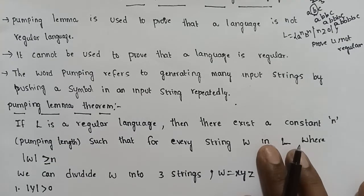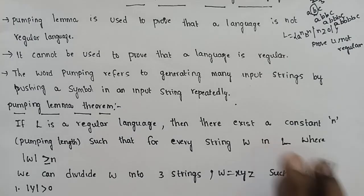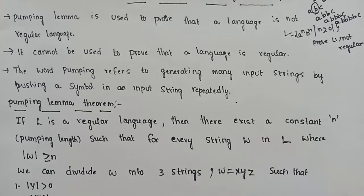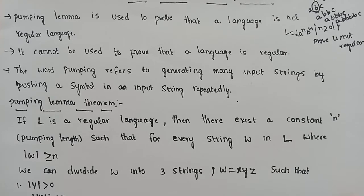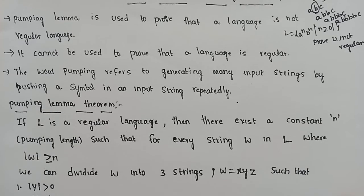If L is a regular language, then there exists a constant N. This constant N is the pumping length. In that regular language, there exists a constant N, and that constant is the number of states in the finite state automaton.